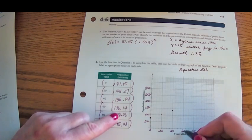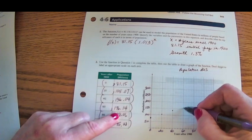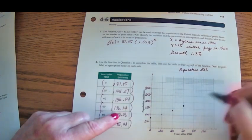When x is 60, y is 176. 150, 160, 170. There's 176.